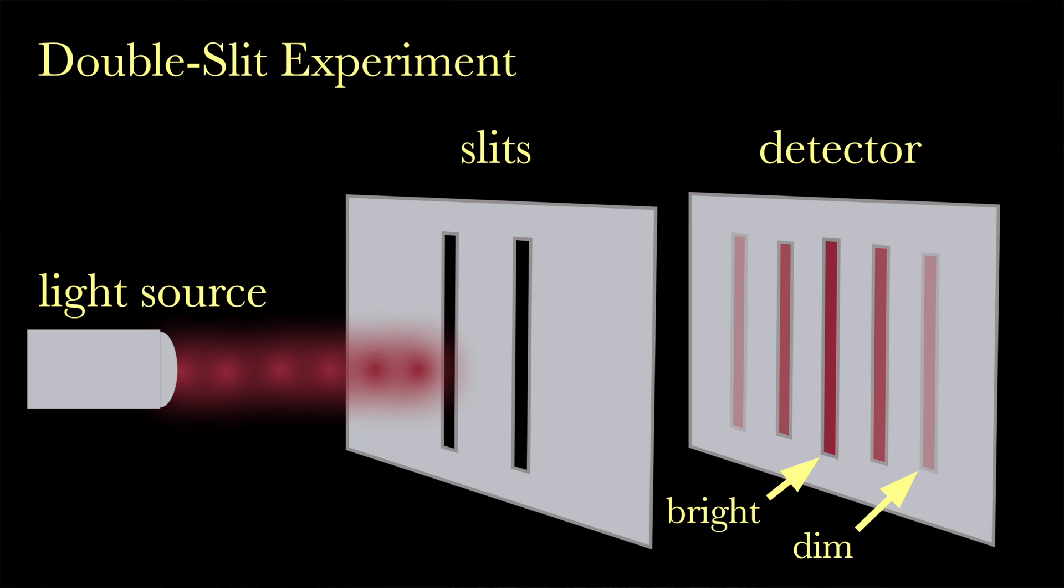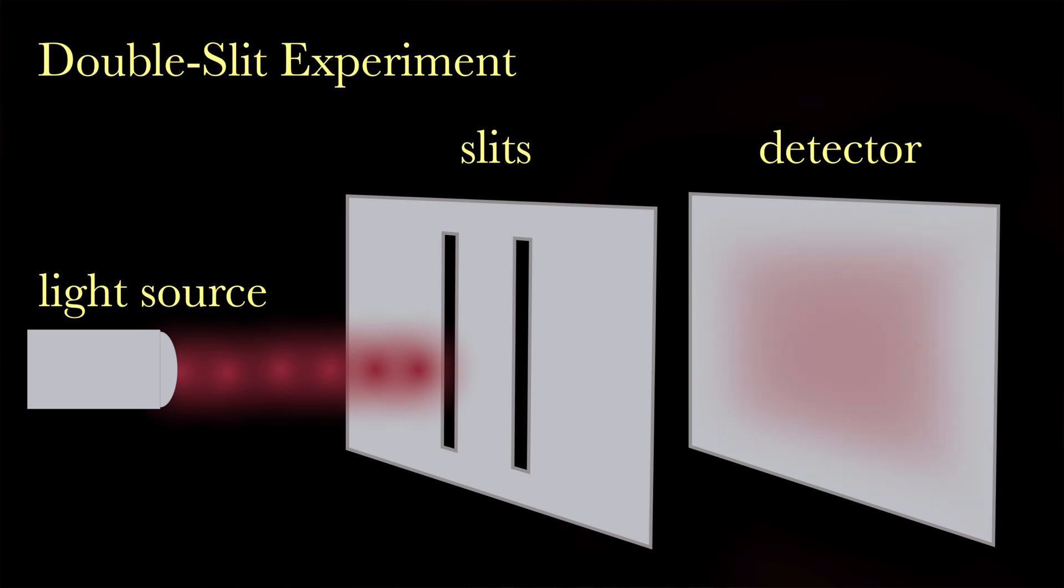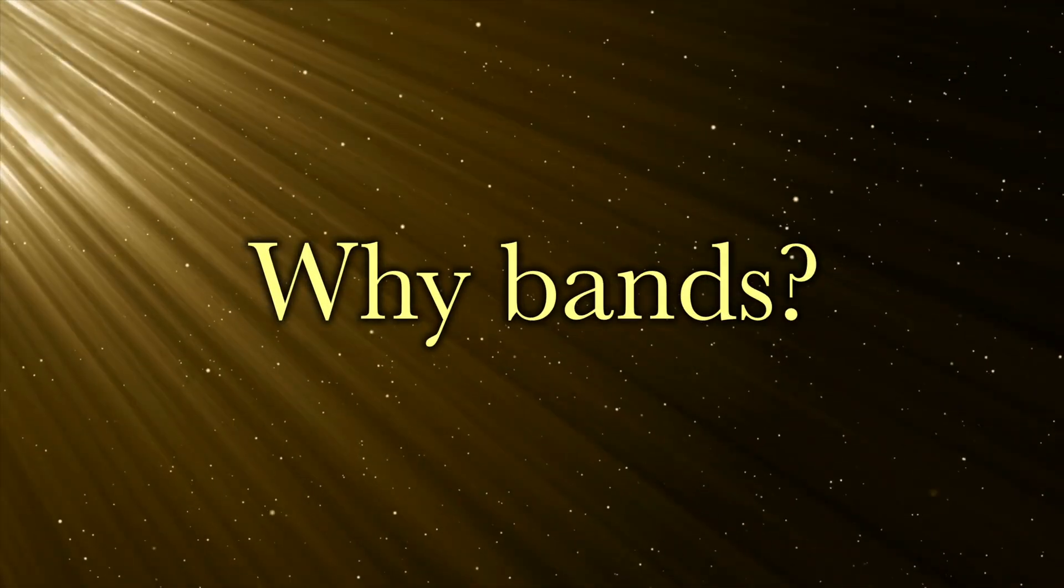This result wasn't anticipated. It was more logical to think that there would be either two bands exactly behind each slit, or there would be a fuzzy region where light was evenly distributed across the film. However, neither occurred. So why do bands emerge?